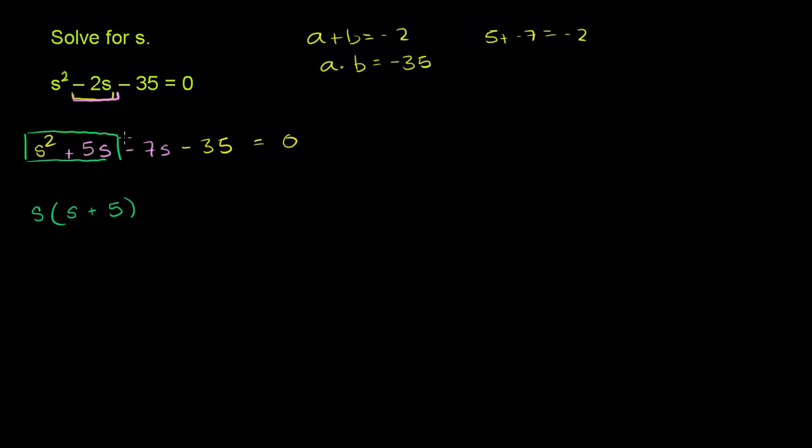Now, in these second two terms right here, you have a common factor of negative 7. So let's factor that out. So you have negative 7 times s plus 5. And of course, all of that is equal to 0.